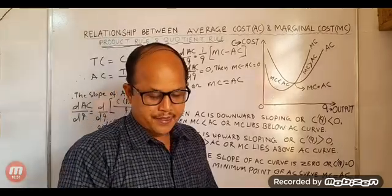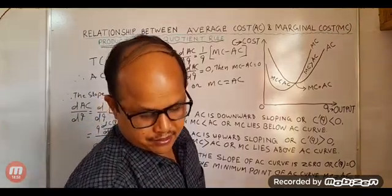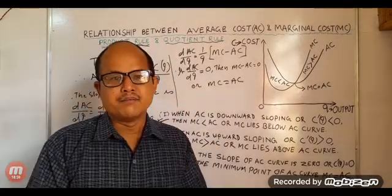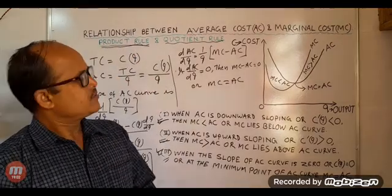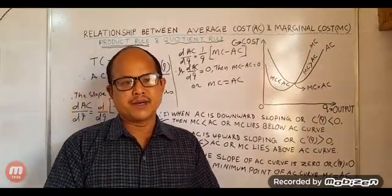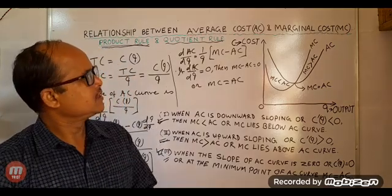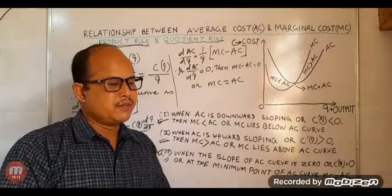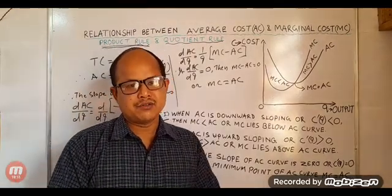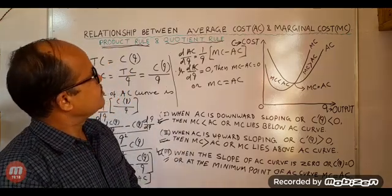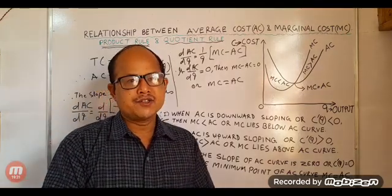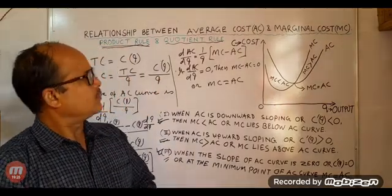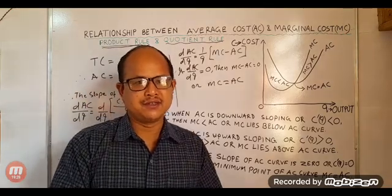So this is how we may use differential calculus to establish the relationship between average cost and marginal cost — using the product rule of differentiation as well as the quotient rule of differentiation to explain the relationship between the average cost curve and the marginal cost curve. Thank you.